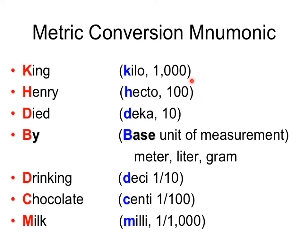Kilo is a thousand times the base, hecto is a hundred times the base, and deca is ten times the base. So if I have a meter stick and line up ten of them, I have a dekameter. One hundred meter sticks would be a hectometer. One thousand meter sticks would be a kilometer. If I took that meter stick and cut it into ten pieces, each piece would be a decimeter. Cut into a hundred pieces, each piece would be a centimeter. Cut into a thousand pieces, each tiny piece would be a millimeter.